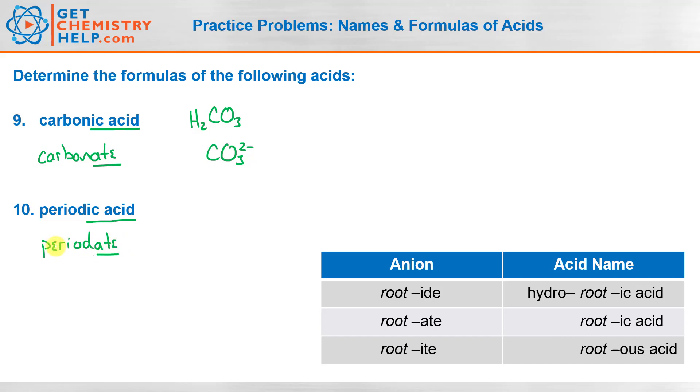So iodate would be IO3 negative. So periodate must be IO4 negative. So the acid must be HIO4. Again, we only need one positively charged hydrogen to balance out the one negative on the anion.